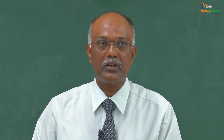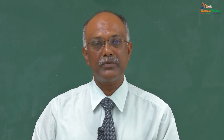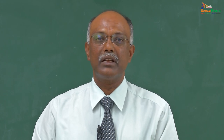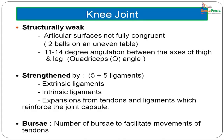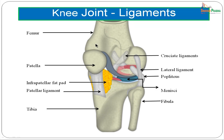This intrinsically weak knee joint is structurally strengthened by five sets of extrinsic ligaments and five sets of intrinsic ligaments, making ten ligaments total that reinforce the knee's strength. Additionally, expansions from tendons and ligaments reinforce the joint capsule. The knee joint also has a large number of bursae to facilitate tendon movements. Extrinsic ligaments are located outside the joint capsule and reinforce it from the outer aspect, while intrinsic ligaments are located within the joint capsule.